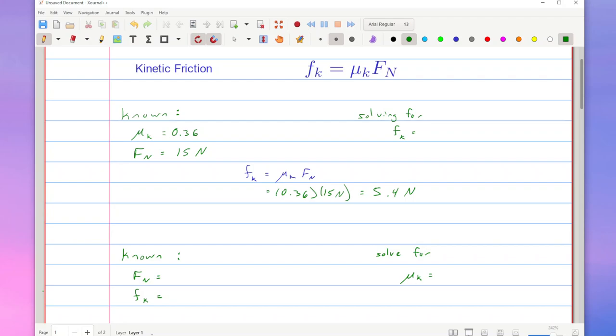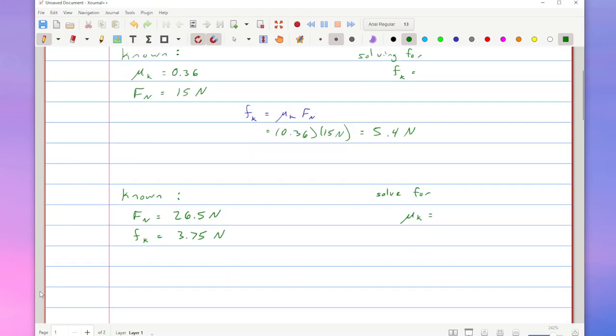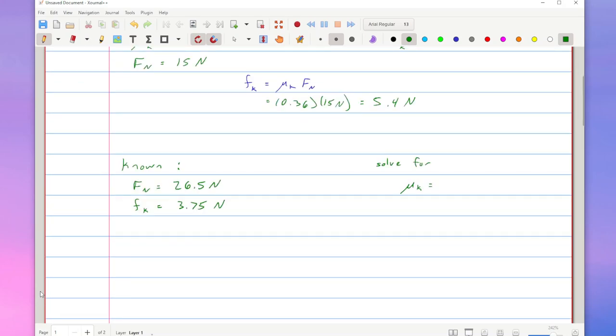In this case, let's use some made-up values again here. Let's say 26.5 newtons and 3.75 newtons. Whatever your particular word problem is will give you the knowns that you need. Now to rearrange this equation, I've got to do a little bit of algebra here, dividing through the normal force such that my coefficient of friction is the frictional force divided by the normal force.